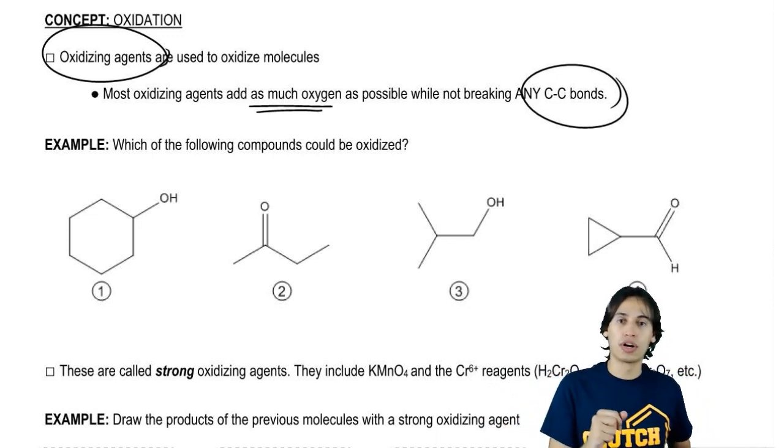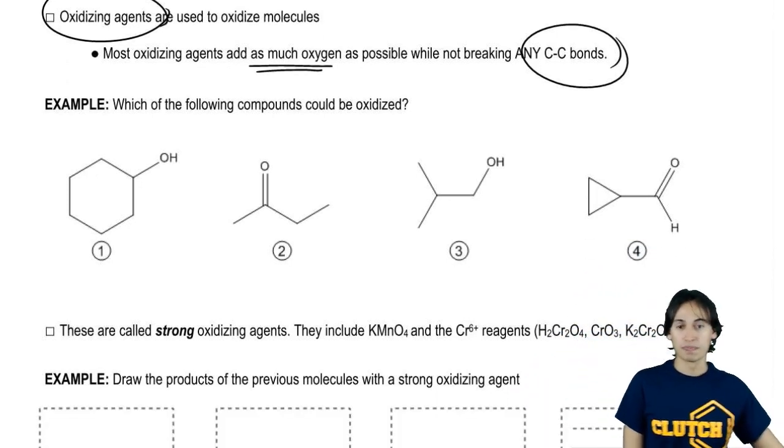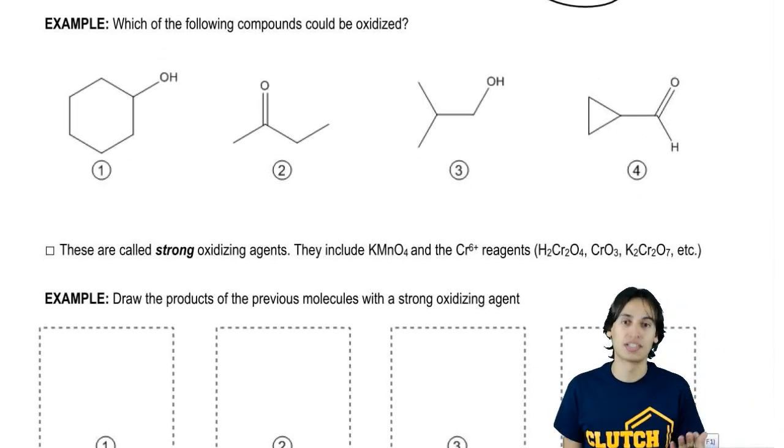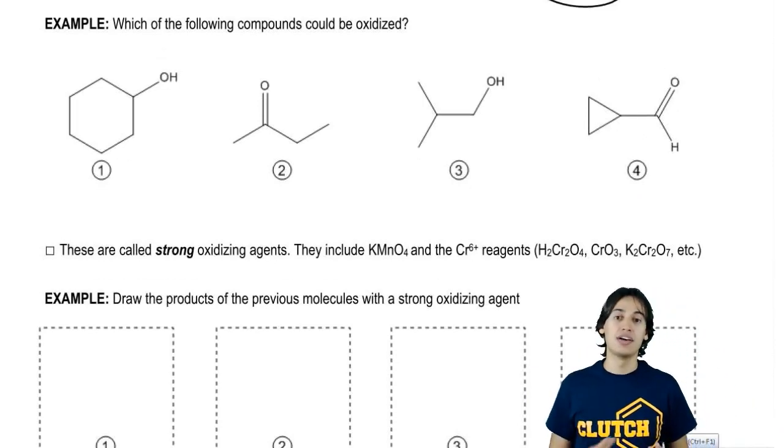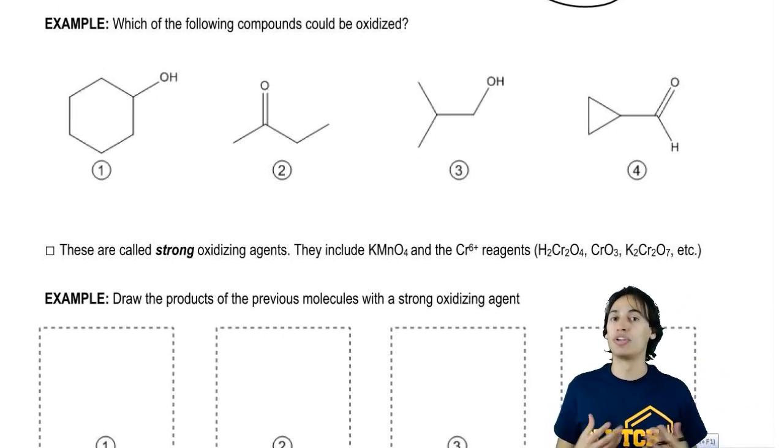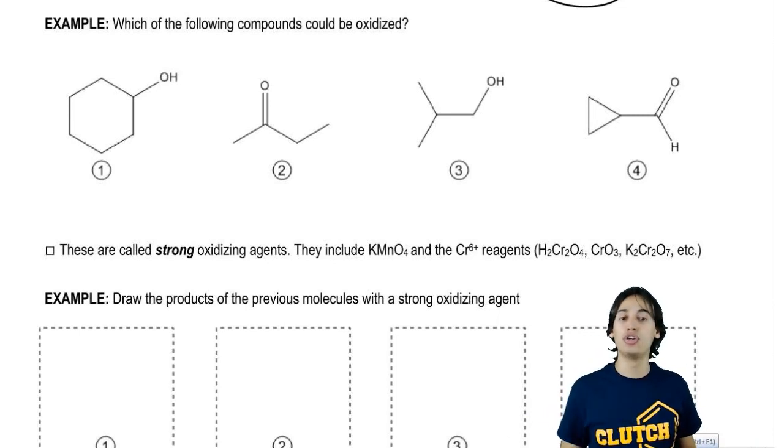But even before we know what the reagents are, we could already jump into a practice problem. What I'm wondering is out of these four molecules here, which of them actually could be oxidized? What I'm basically saying is how many of them could you add bonds to oxygen without breaking a carbon-carbon bond? So I'm going to go ahead and let you guys figure that out. Get back to me. Which of these could be oxidized?